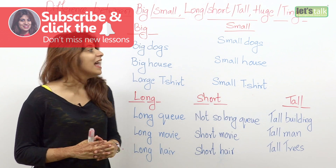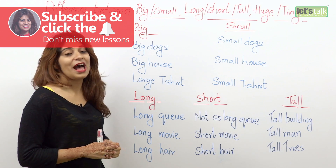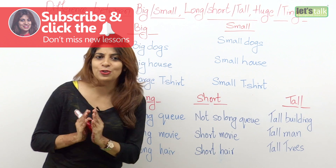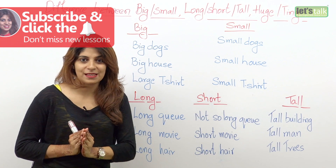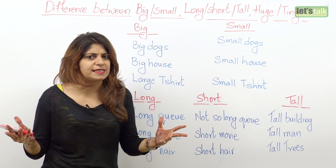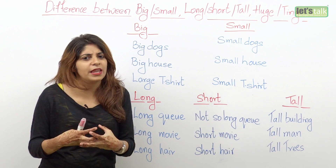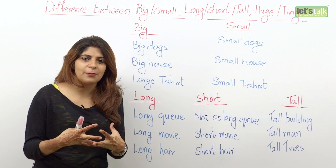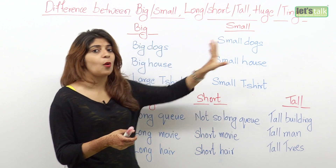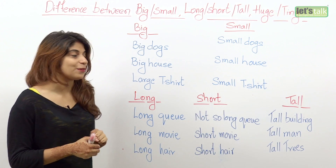So firstly, let's have a look and understand the adjectives big and small. Now when do you use these? When you are talking about general sizes — the general size or general dimensions of something — you end up using the words big or small.